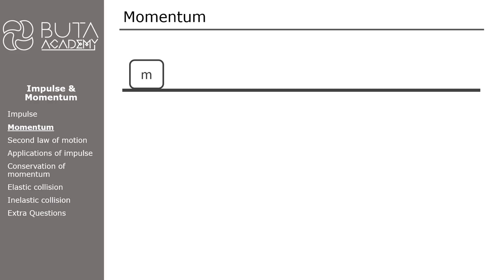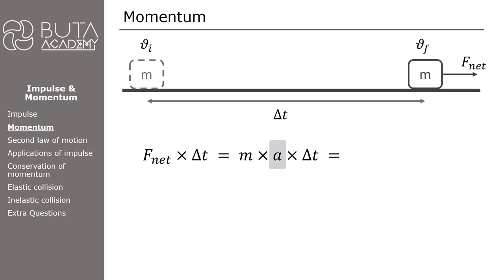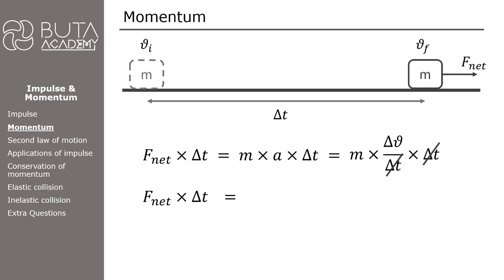Let's imagine an object moving on a surface with an initial velocity Vi under the influence of a net force. After a certain time interval delta T, the velocity of the object becomes Vf. The impulse applied on this object is equal to net force times delta T. According to Newton's second law of motion, net force equals mass times acceleration. And acceleration is the change in velocity over unit time. The delta T terms cancel each other, so impulse, which is F net times delta T, is equal to mass times delta V.